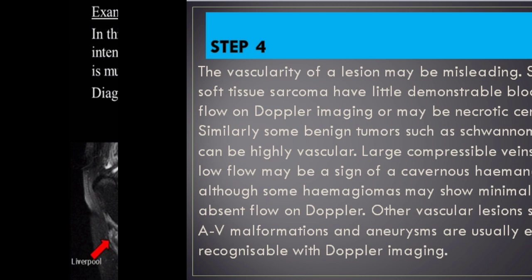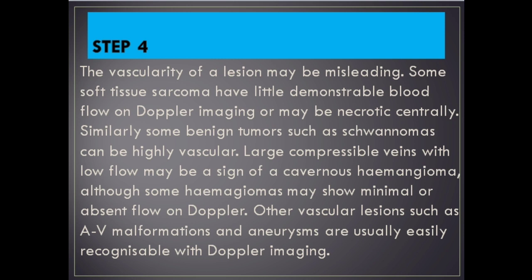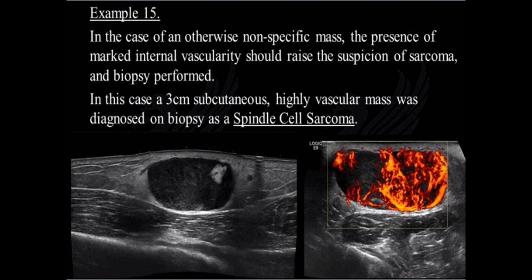Step 4. The vascularity of a lesion may be misleading. Some soft tissue sarcomas have little demonstrable blood flow on Doppler imaging or may be necrotic centrally. Similarly, some benign tumors such as schwannomas can be highly vascular. Large compressible veins with low flow may be a sign of a cavernous hemangioma, although some hemangiomas may show minimal or absent flow on Doppler. Other vascular lesions such as AV malformations and aneurysms are usually easily recognizable with Doppler imaging. Example 15: In the case of an otherwise nonspecific mass, the presence of marked internal vascularity should raise suspicion of sarcoma and biopsy should be performed. In this case, a 3 cm subcutaneous highly vascular mass was diagnosed on biopsy as a spindle cell sarcoma.